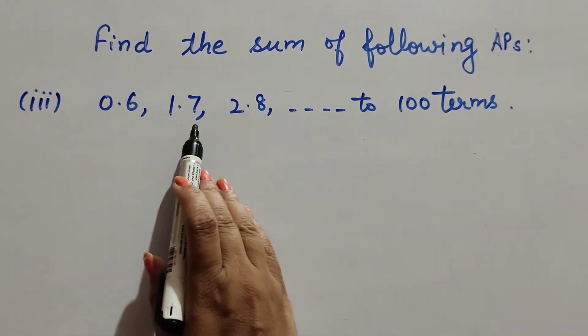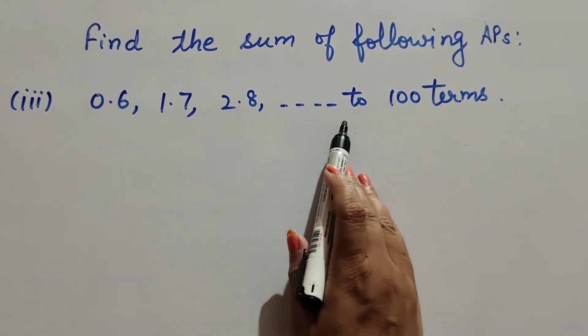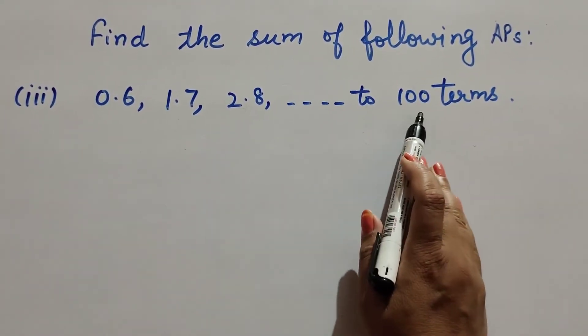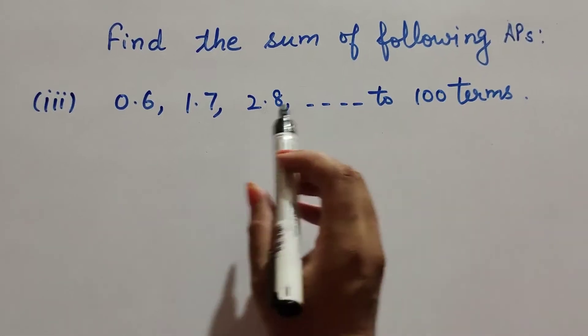There is third part: 0.6, 1.7, 2.8 and so on to 100 terms. So we find the sum of 100 terms in this AP series.